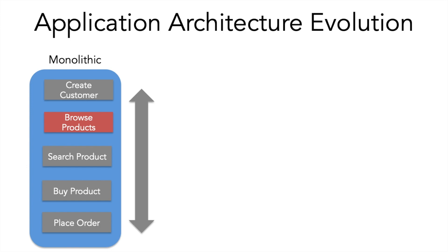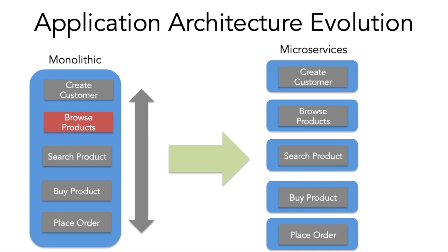Over time this application architecture changed. First came service-oriented architecture, where you group similar types of application components together. Currently we are seeing microservices architecture, which says you should divide your application along multiple dimensions. For this online retail example, the dimensions would be individual functionalities: create customer is one dimension, browsing products another, search product and buy product are other dimensions. In other applications the dimensions might be different, but the underlying principle remains the same.